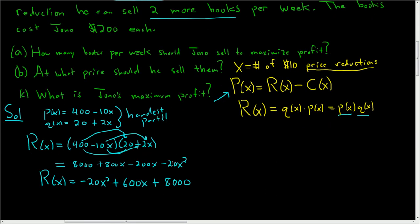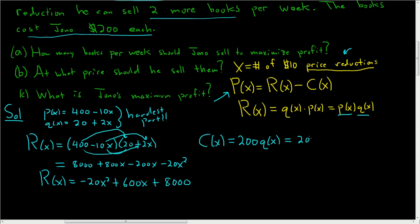Now we have to find the cost function. The cost is $200 each — the books cost him $200 each. Normally it would just be 200X, but in this case X is price reductions, so it's $200 times the number of books he sells, which is $200 times the quantity function Q of X. So 200 times (20 + 2X) equals 4,000 + 400X. That is our cost function.